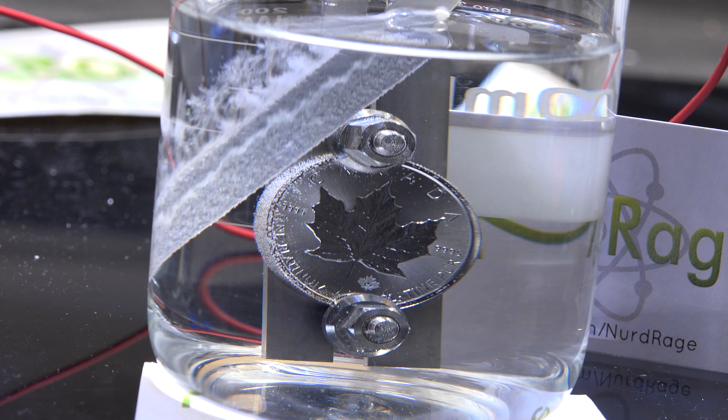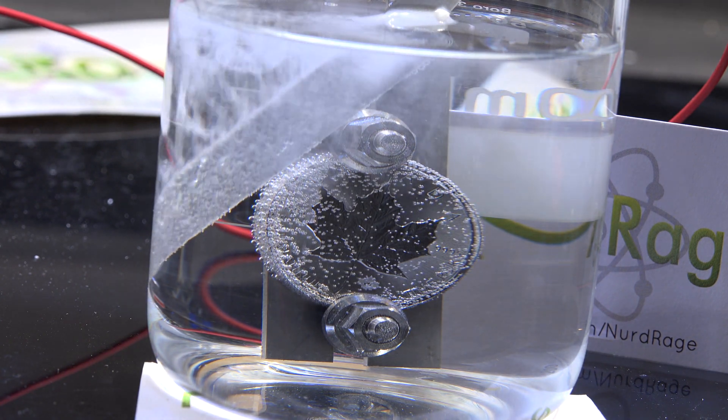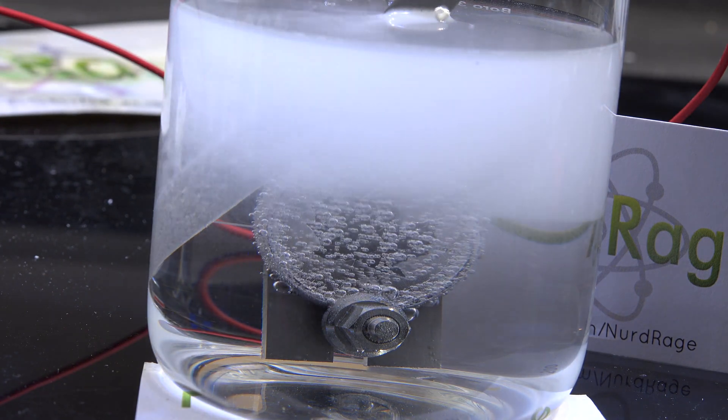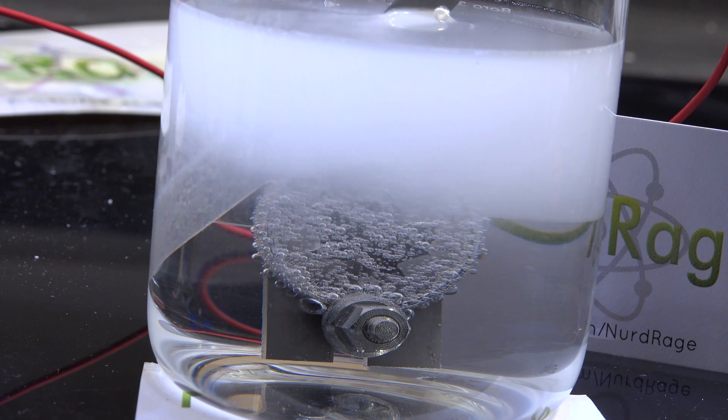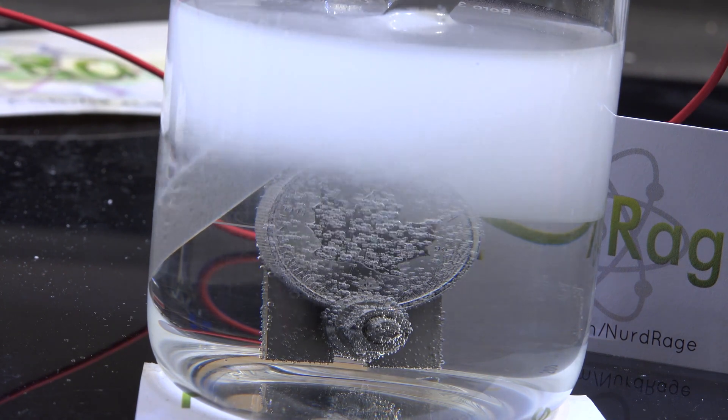And there we go. Looks like it's working. The titanium holding the platinum is not reacting as it passivates when used as an anode. All of the current is going through the platinum as evidenced by the bubbling. Even after several hours of electrolysis the electrode seems fine.